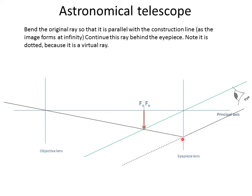Bend the original ray so that it's parallel with the construction line, because the image forms at infinity. And continue this ray behind the eyepiece. Note that it's a dotted ray because it's a virtual ray.